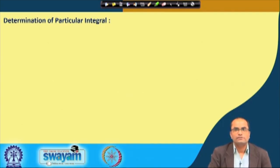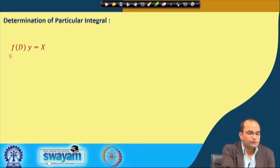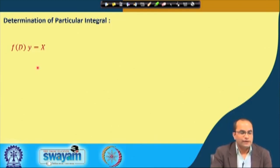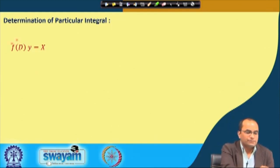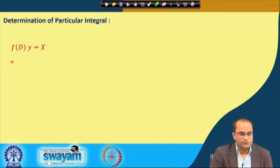In today's lecture our focus will be how to find a particular solution of the given differential equation. The given differential equation written in operator form is f(D)y = X, where X is a function of x, and this expression f(D) has been already discussed in the previous lecture.